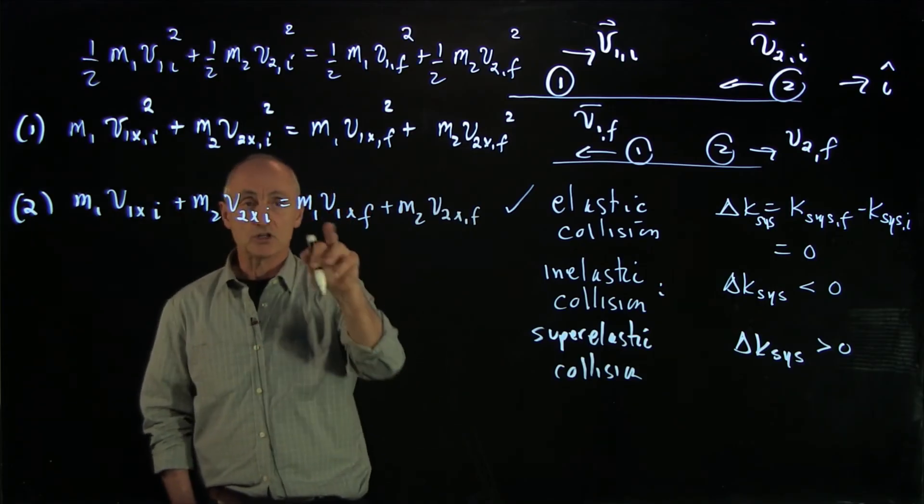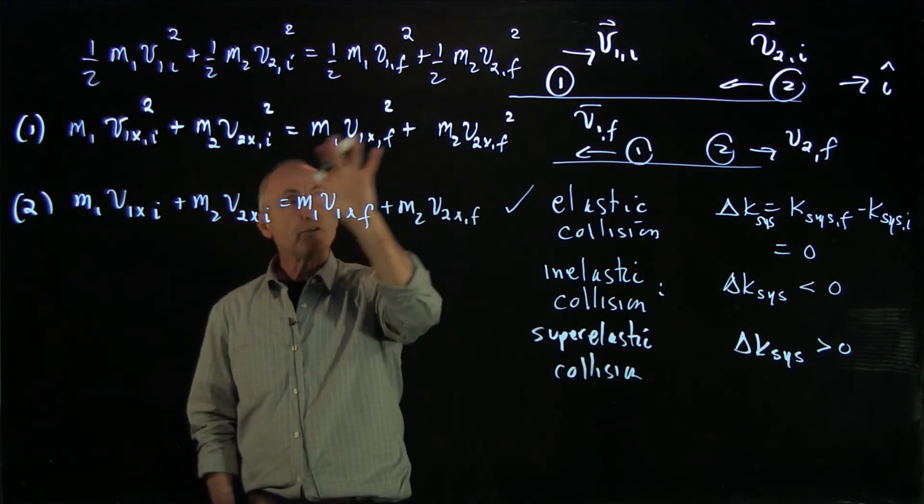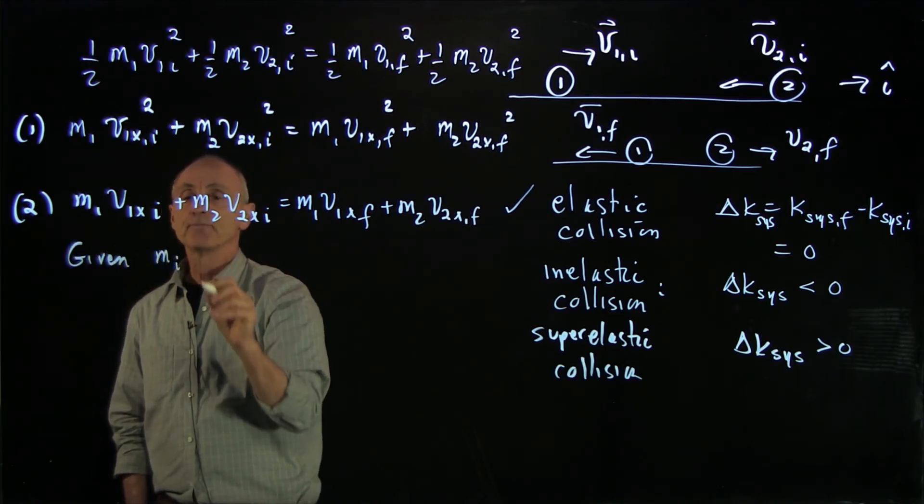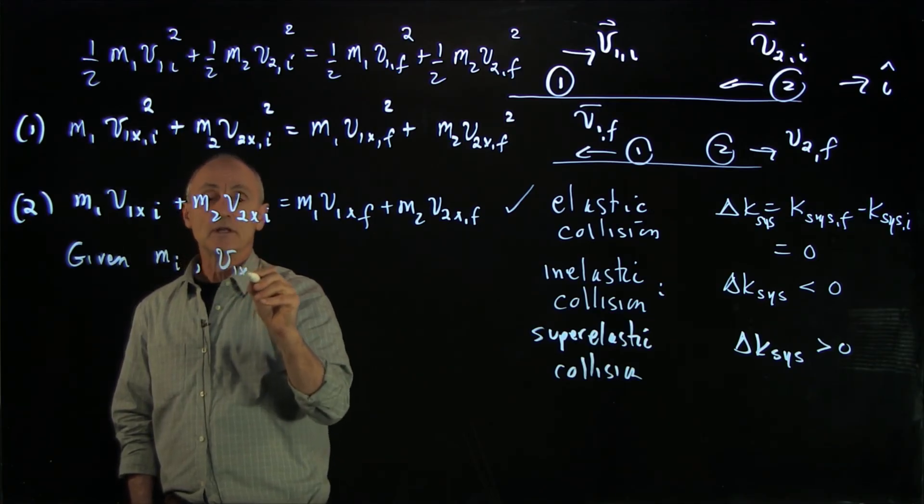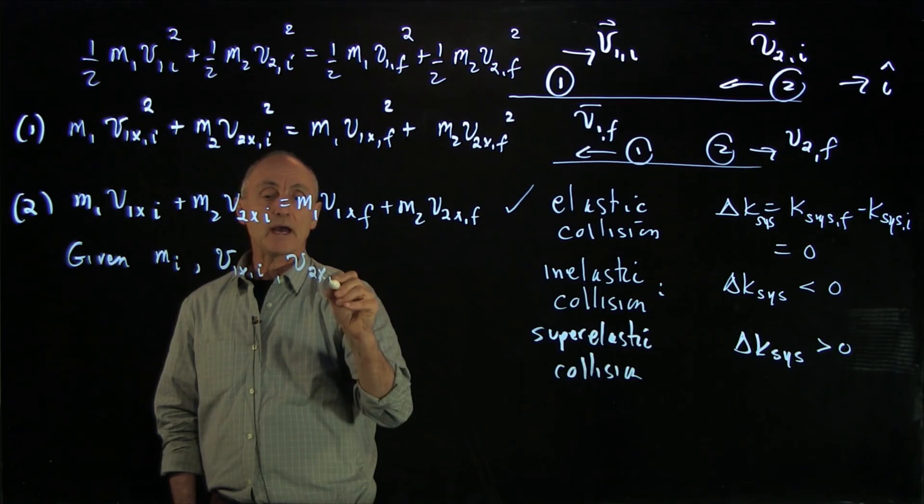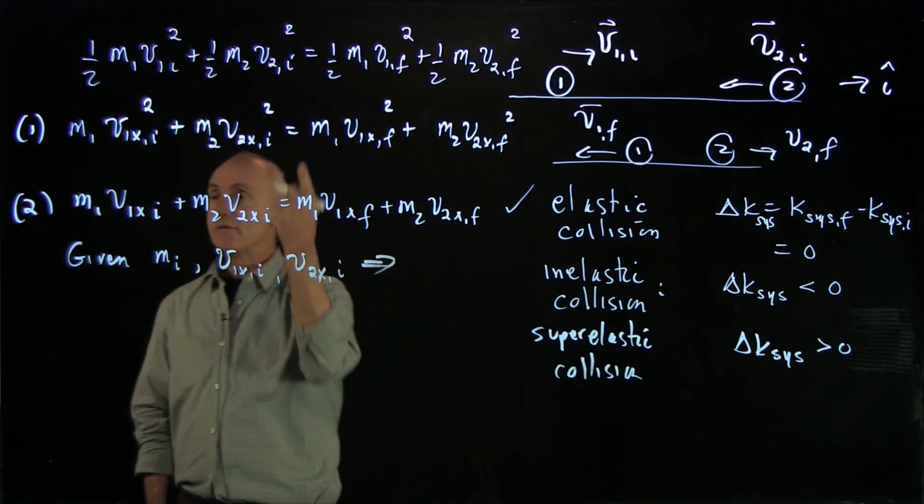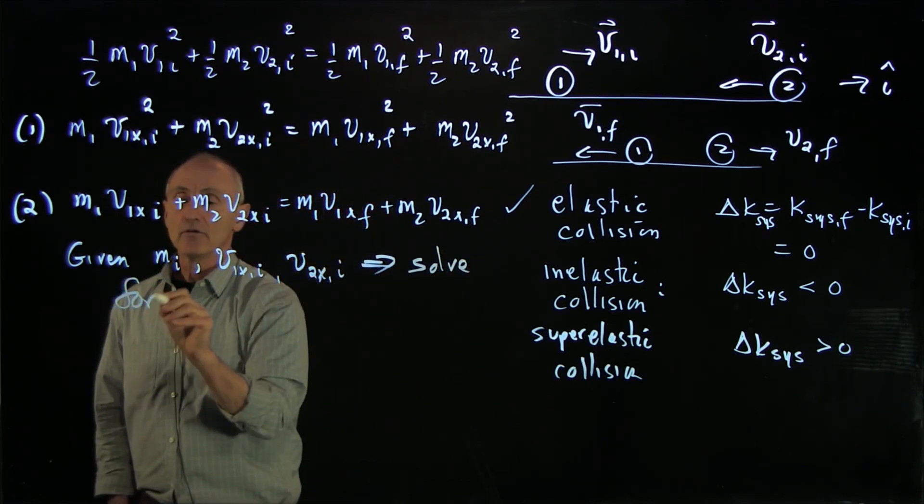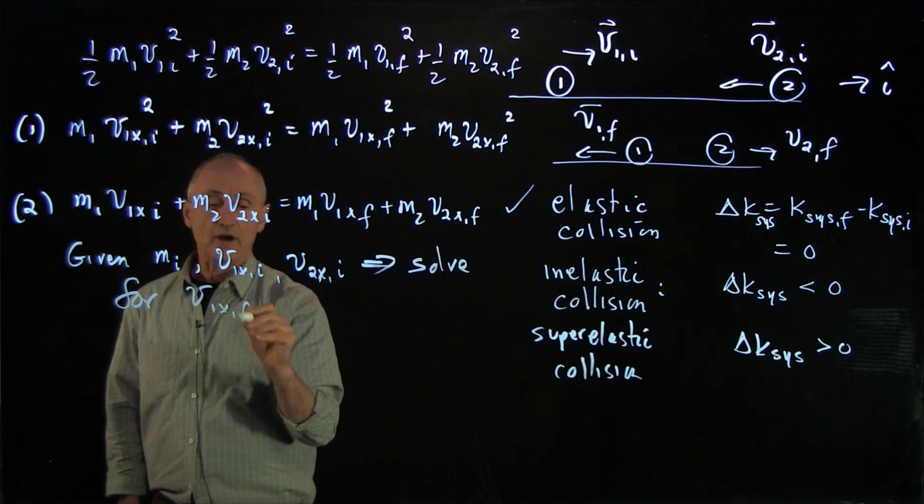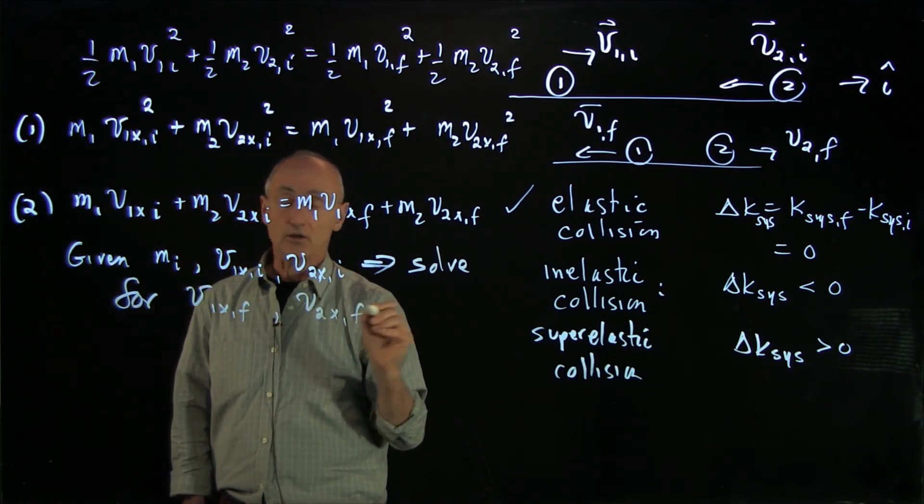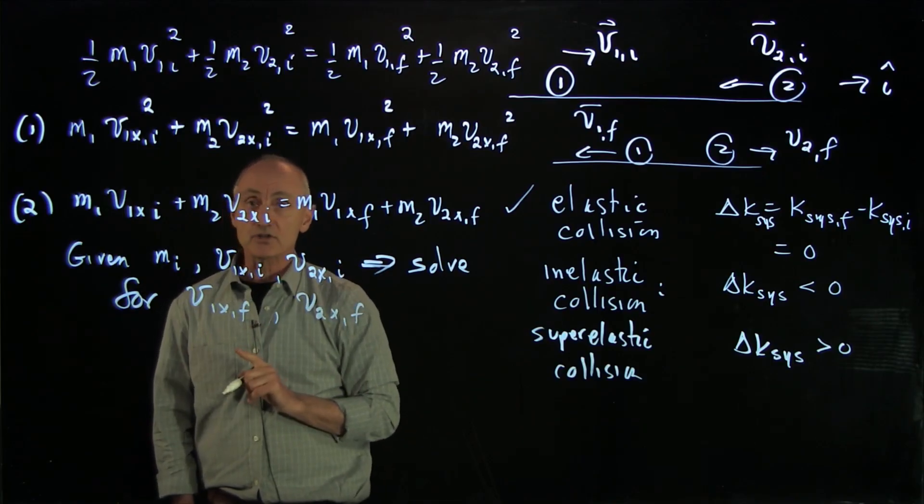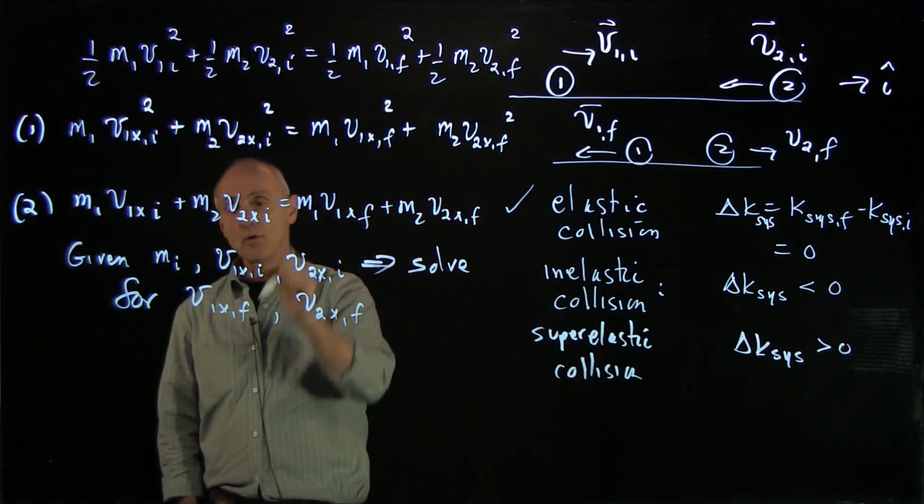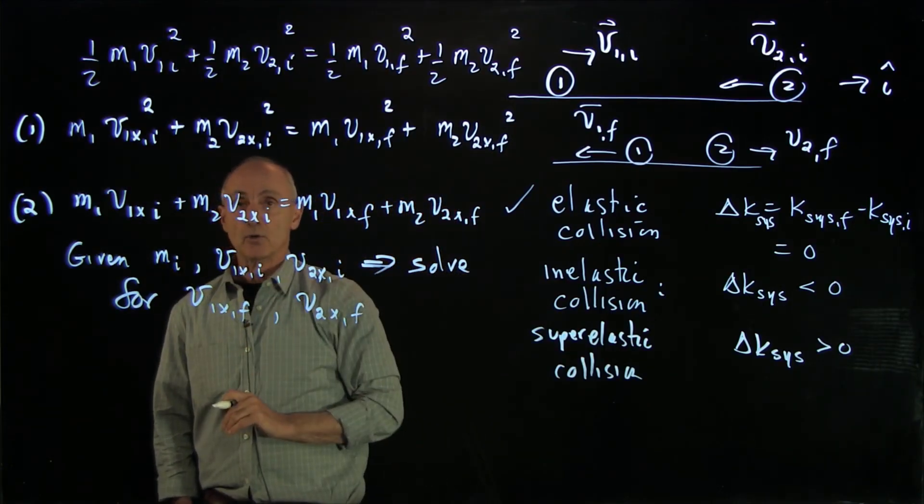Now, if we're given the masses (all the mᵢ's) and the initial state of the system (v₁ₓ initial and v₂ₓ initial), then we have two equations and two unknowns. We can solve algebraically for v₁ₓ final and v₂ₓ final. By determining the signs of these components, we can figure out the actual final state of the system. This will involve a quadratic equation.